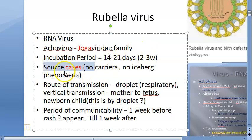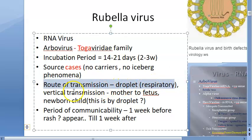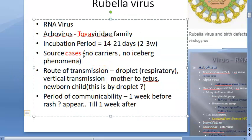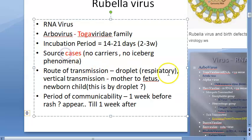The source is the case, and the route of transmission is droplets — it is a respiratory infection. Vertical transmission (mother to fetus) is also possible. There is no iceberg phenomenon, meaning no carriers. The period of communicability is one week before the rash and one week after.